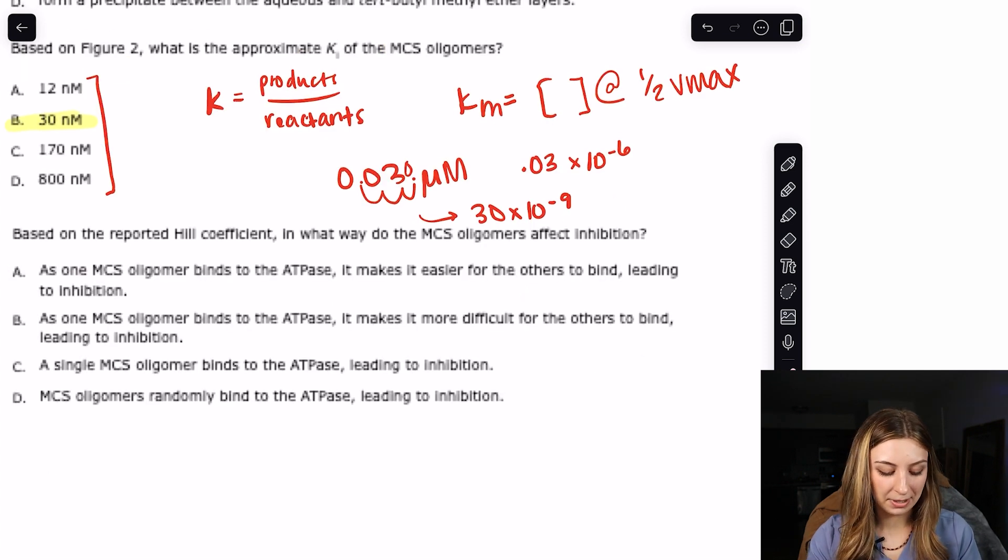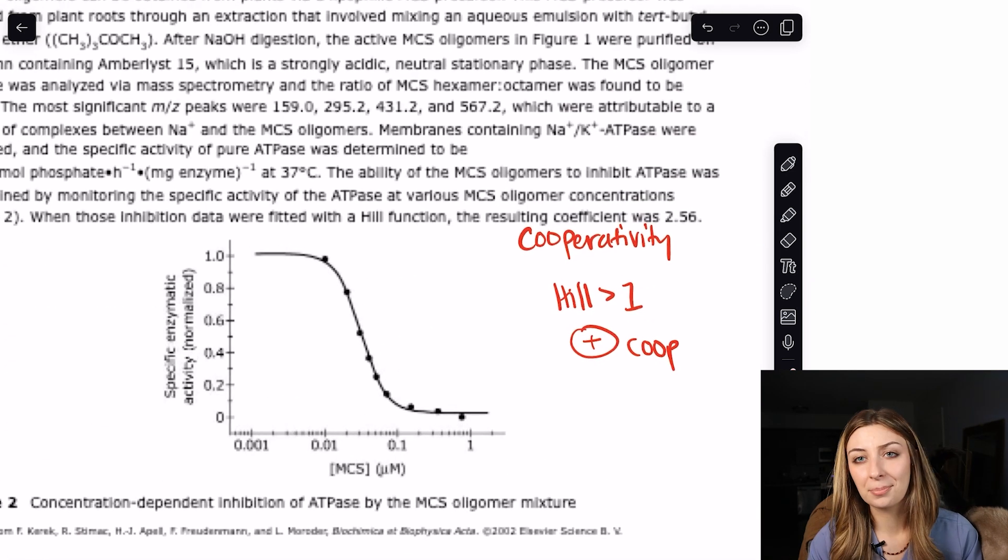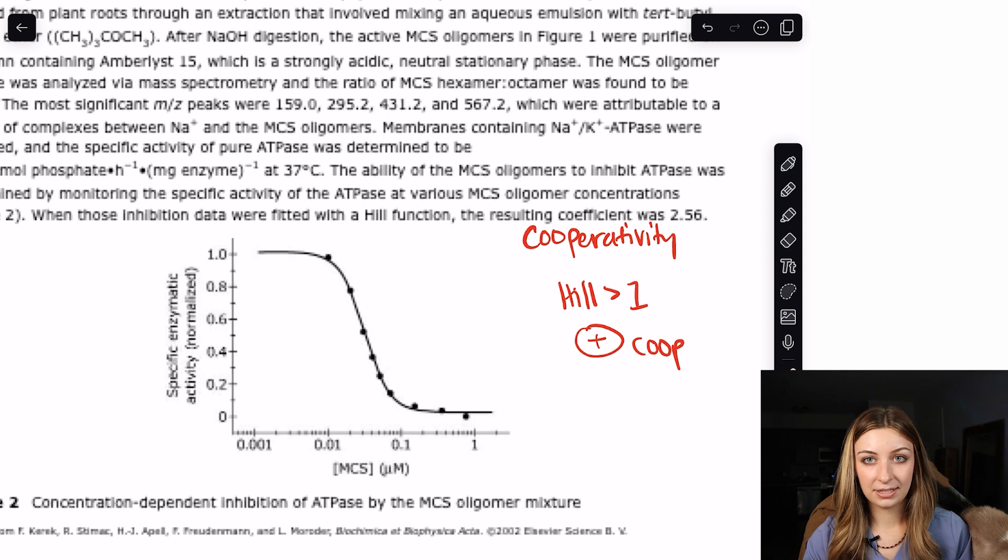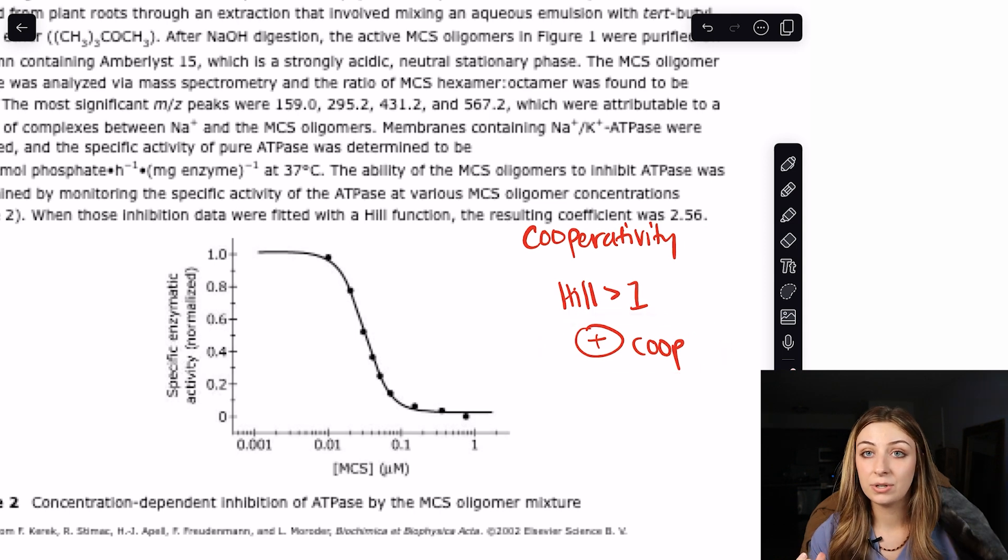This video is getting a little long, so I'm going to wrap it up. Based on the reported Hill coefficient, in what way do the MCS oligomers affect inhibition? This is a good one to end on because we actually already talked about it up in the passage, which is a great example of foreshadowing. A Hill coefficient of greater than one is going to be positive cooperativity. If it's less than one, then it's going to be negative cooperativity. Positive cooperativity means that as you add substrate, it makes it more likely that you're going to get more substrate. Negative inhibition will be the opposite.